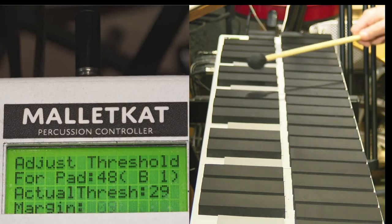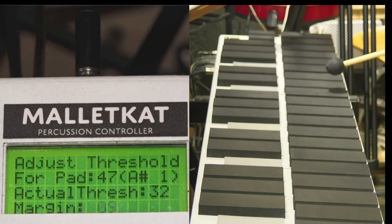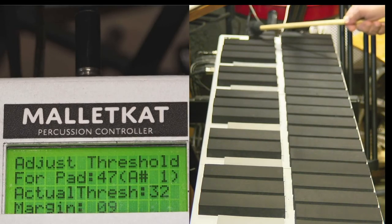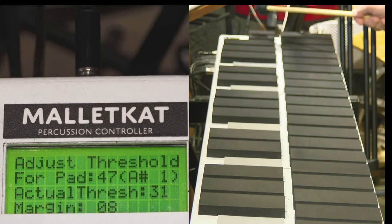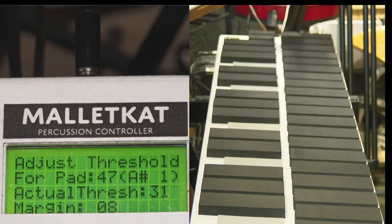If you want to change the margin on a particular pad, you can do that by hitting that pad and then hitting the backwards key or the forwards key to raise it and lower it. That's how you can check all of the pads.